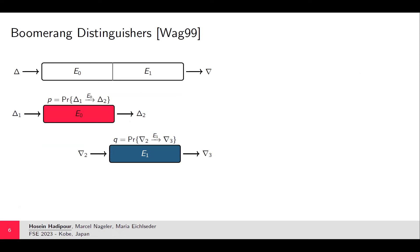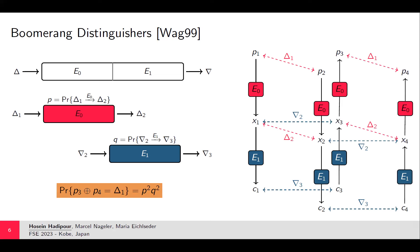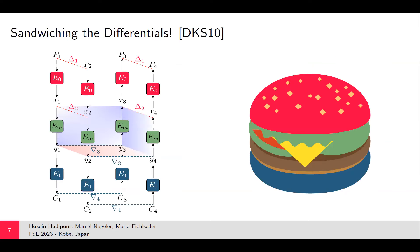Assume you have two short differential transitions with very high probabilities p and q respectively, but they cannot be linked because the intermediate differences are incompatible. In this case the boomerang distinguisher comes to help. The core idea is combining these two short differentials in an adaptively chosen plaintext/ciphertext setting: encrypt a pair of plaintexts with difference delta_1, modify the resulting ciphertexts by difference nabla_3, decrypt them, and check if the difference between P3 and P4 is delta_1. If the upper and lower differential transitions are statistically independent, the probability is p²q², but in practice they are not independent.